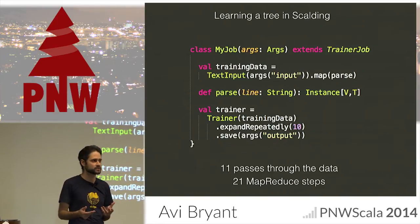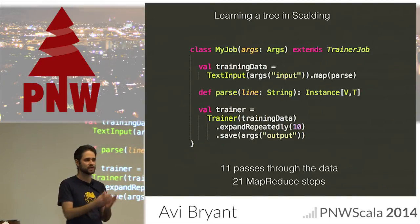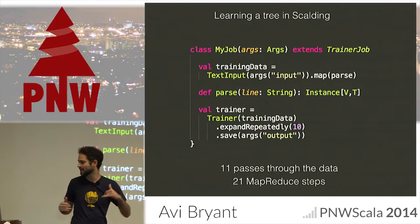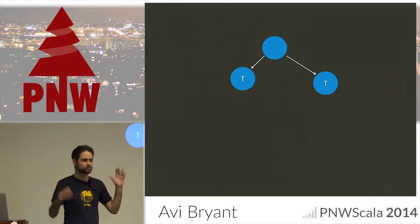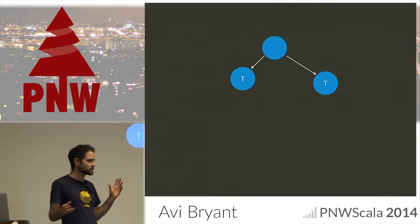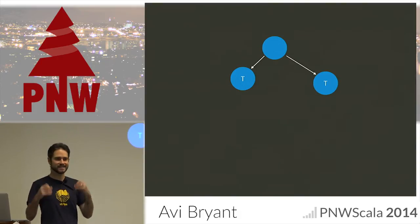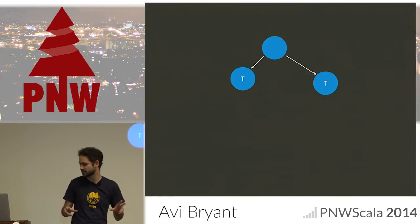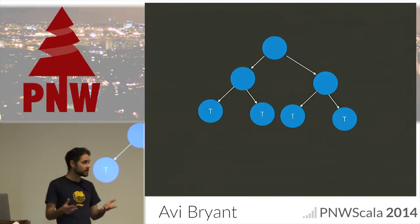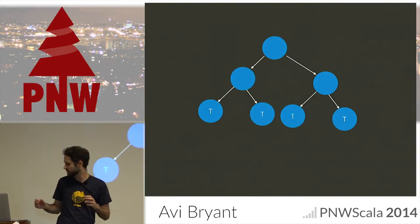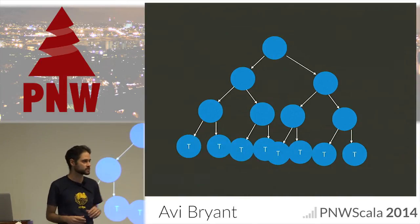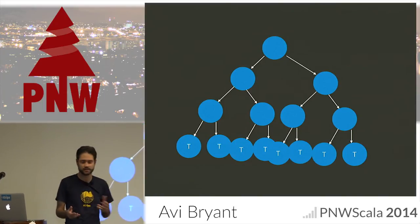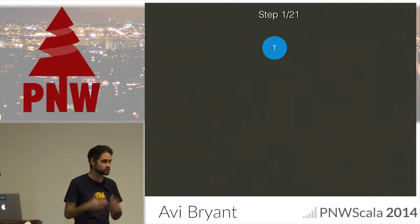That's because this is a recursive process where each pass through the entirety of the data expands our tree by one level. So you start with a simple tree, and the recursive process takes each leaf in the tree and produces new children for each of those leaves. You would go from there to here in one pass — two MapReduce steps, one pass through the data — and from there to here, and so on.